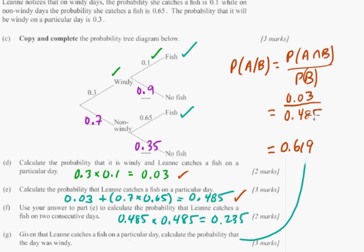That's an IB probability problem covering most of the main types — aside from a Venn diagram like in the last video. A table and a tree diagram are very common formats. Anyway, I hope this helped. Go Giants. Take it easy.